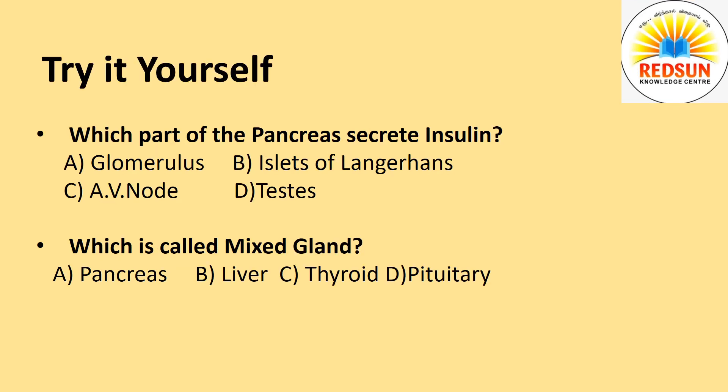Try it yourself. Which part of the pancreas secretes insulin? Options: glomerulus, islets of Langerhans, AV node, or testis. Which is called the mixed gland? Options: pancreas, liver, thyroid, or pituitary gland.